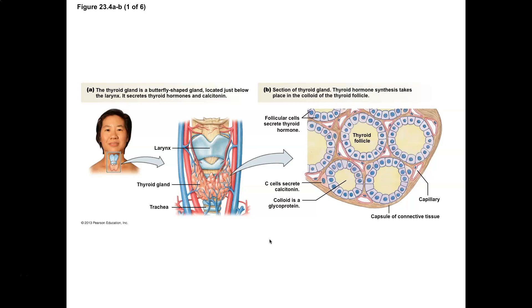The follicular cells are the cells that actually produce thyroid hormone. So this is where you get T3 and T4.